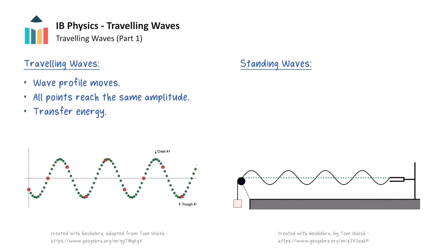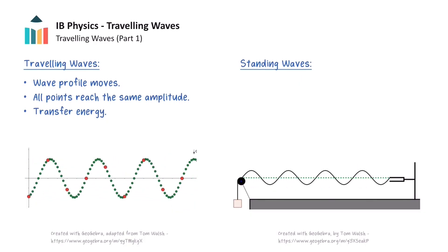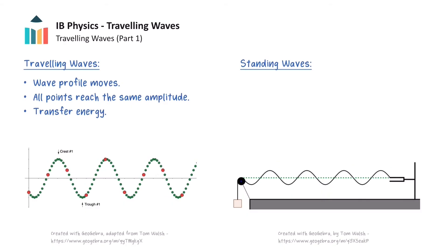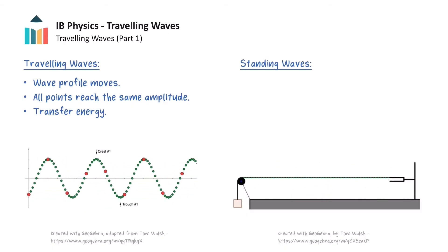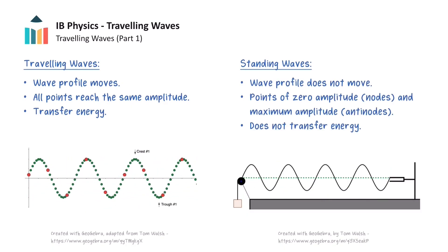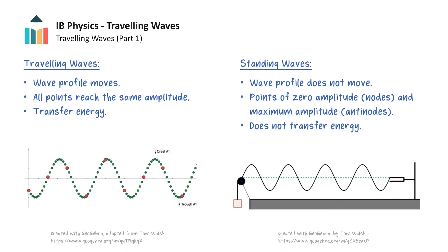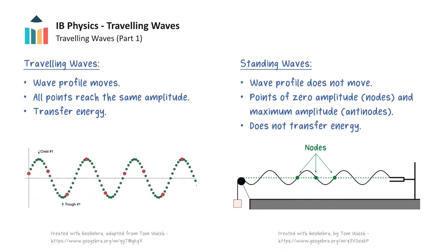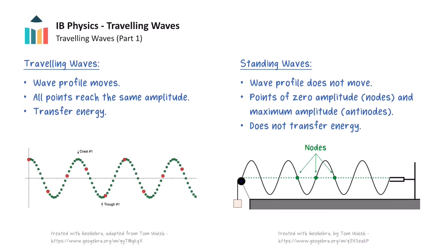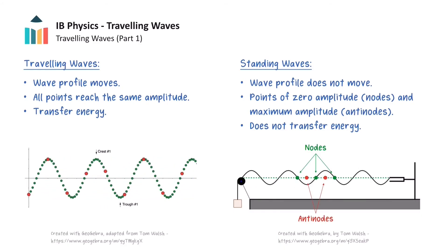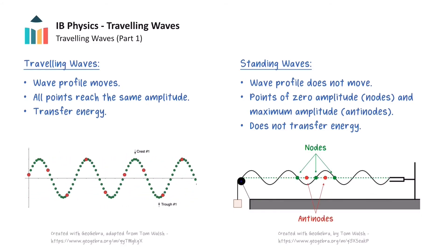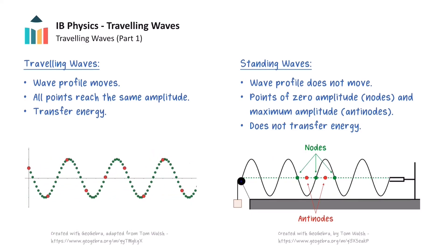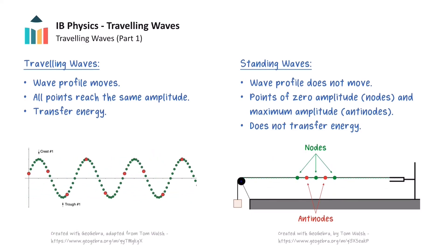This animation to the right shows a standing wave. One noticeable difference is that we no longer see the wave profile moving across the screen. The location of the peaks of the wave are not moving, or standing still, which is why we call it a standing wave. Points with zero amplitude are called nodes. And halfway between any two nodes, we have points of big amplitude, called anti-nodes. Since a standing wave does not move, standing waves do not transfer energy.